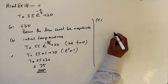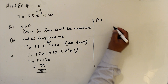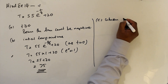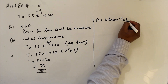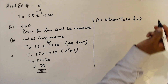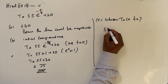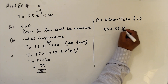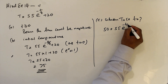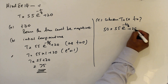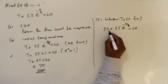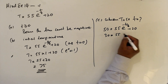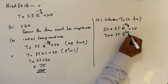Part C: we want to find the time when T equals 50. So substituting: 50 equals 55 e to the power of minus t over 8 plus 20. Rearranging gives 30 equals 55 e to the power of minus t over 8.